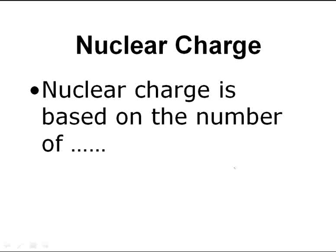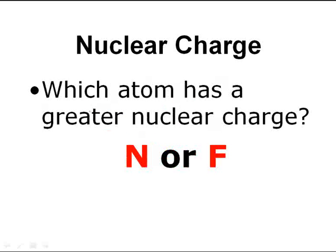Nuclear charge is based on the number of protons. Nuclear charge is the same thing as saying protons. The nuclear charge is a positive charge — I often write this as P+ — indicating the protons have a charge. They're located in the nucleus, therefore that's where I get the word nuclear charge. Which atom has the greater nuclear charge — nitrogen or fluorine? If nuclear charge is based on protons, the question is which atom has more protons. The answer is fluorine. Fluorine has nine protons and it's definitely going to have a greater nuclear charge.